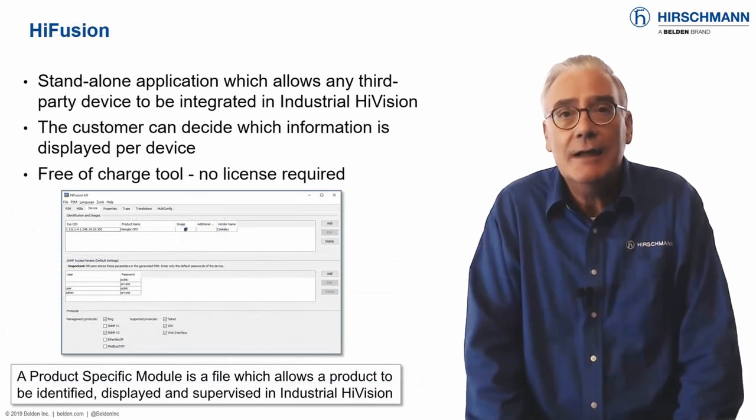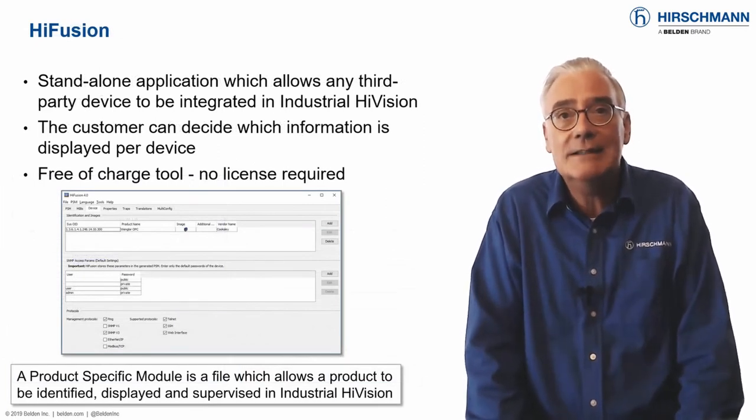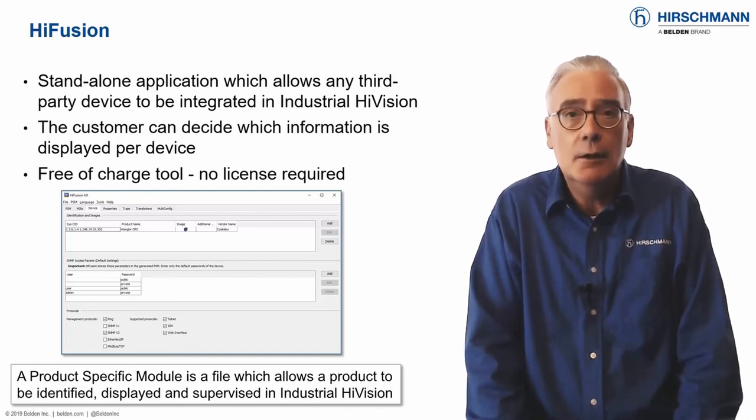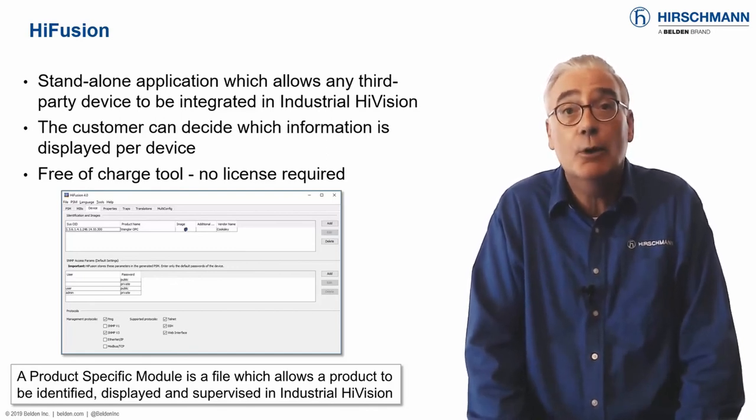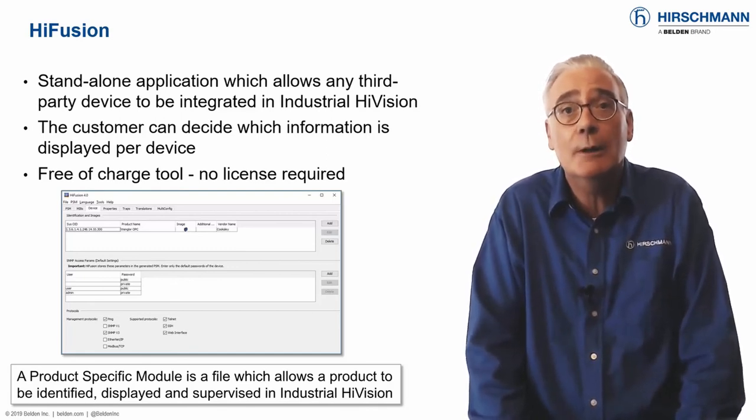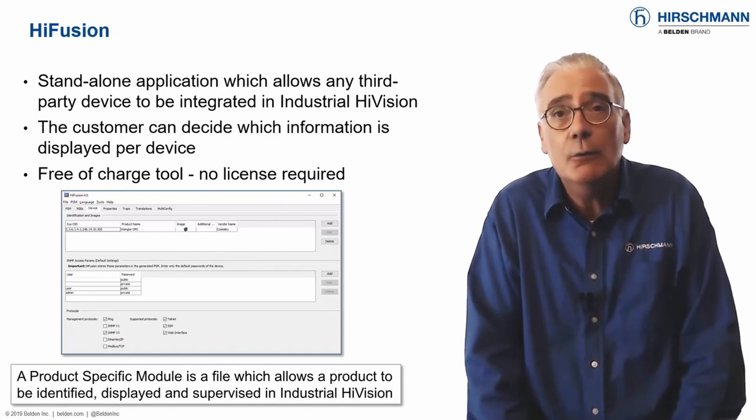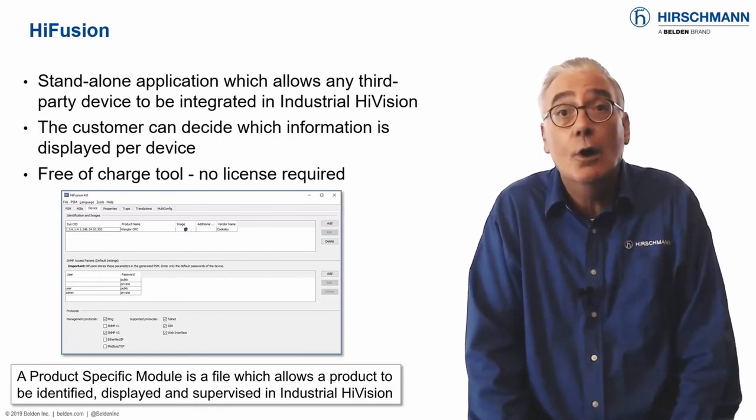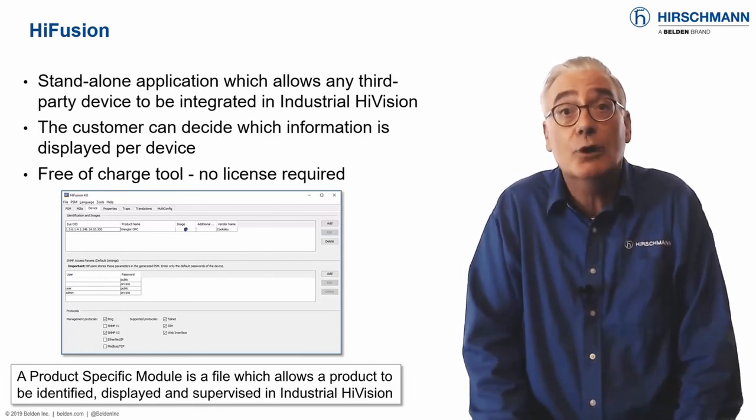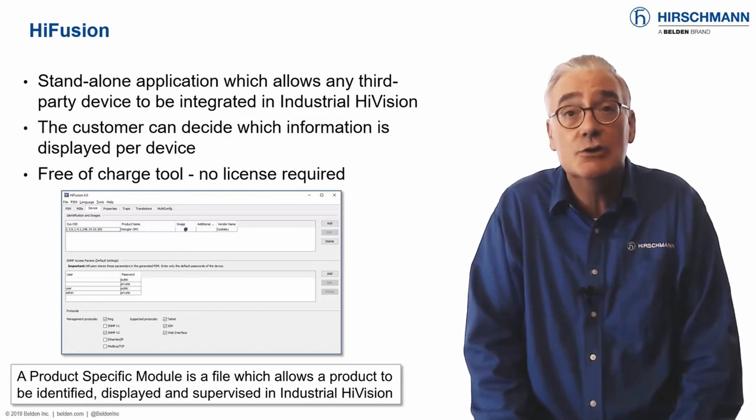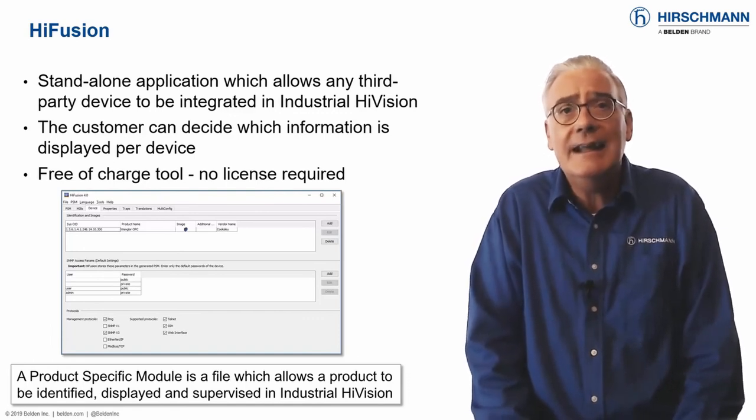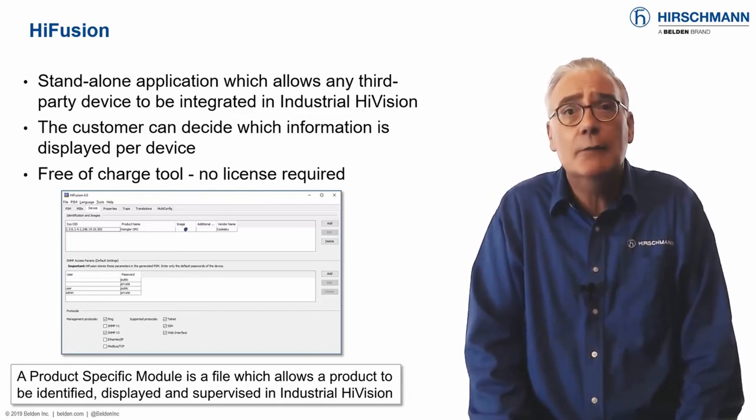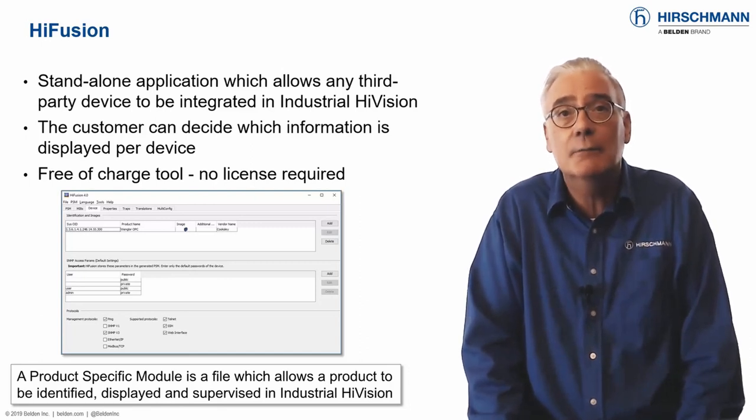Industrial HiVision was developed to configure and supervise Hirschmann network devices. But modern OT networks increasingly support equipment from many manufacturers. This can include network infrastructure equipment from other well-known vendors, or end devices which do not have their own supervision software. In any case, Industrial HiVision can meet the challenges of a mixed environment.